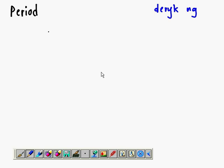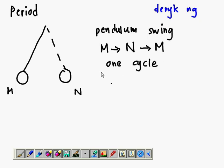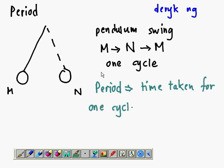What is period? Time taken for this pendulum to swing from one place to another. Let's label it M and N. If you travel from M to N and back to M, we call the time taken for the oscillation one cycle, and we call it period. Period is basically time taken for one complete oscillation or vibration.